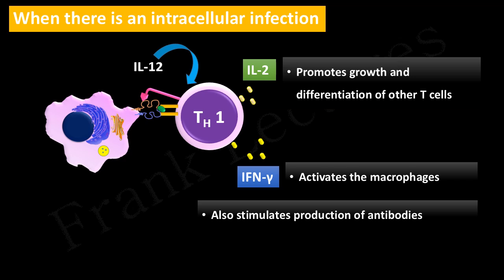So, interleukin-12 induces differentiation of T helper type 1 cells, and these T cells secrete interferon gamma and interleukin-2. The main function of T helper type 1 cells is to help macrophages to fight against intracellular infections.